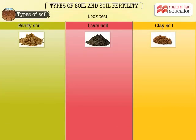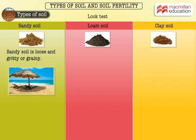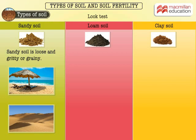Let's begin with the look test. Just by looking at the moist soil samples, you can learn to identify the type of soil. Sandy soil is loose and gritty or grainy. We get to see this on riverbeds and beaches.